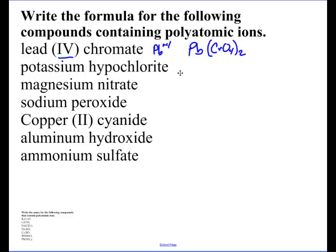On to the next one. Potassium hypochlorite. Ooh, hypo. What did hypo mean? Hypo meant the fewest. So, it's KClO. This is minus one. This is plus one. Not too bad. Magnesium's got a plus two charge. Nitrate's got a minus one charge. How many of these am I going to need? I'm going to need two. So, Mg. Now, since I'm going to need two of a polyatomic ion, I've got to use a parenthesis.